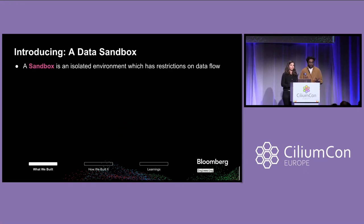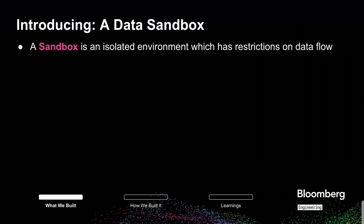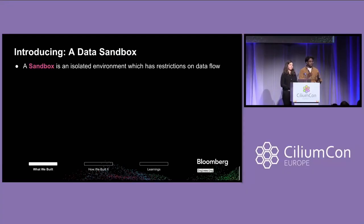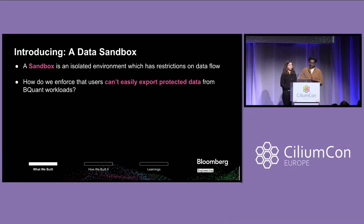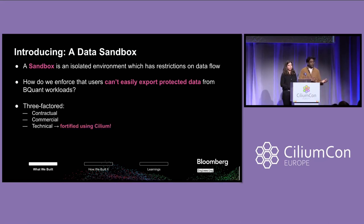So we need to create something called a data sandbox. All that means is a way to launch Jupyter workloads that have broader access to data, but a more limited scope on how they can use that, which includes things like data flow and data distribution. The question is: how do we enforce that users can't easily export protected data from these BQuant workloads? There's a contractual element, a commercial element, but what we're interested in is the technical component in which we fortify our network using Cilium.